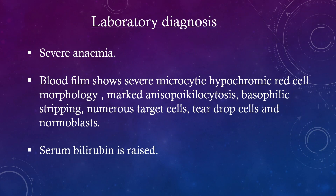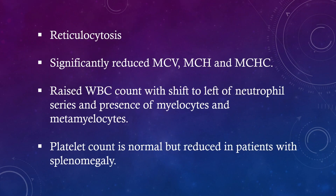Laboratory diagnosis: severe anemia. Blood film shows severe microcytic hypochromic red cell morphology, marked anisopoikilocytosis, basophilic stippling, numerous target cells, teardrop cells, and normoblasts. Serum bilirubin is raised. Reticulocytosis. Significantly reduced MCV, MCH, and MCHC.